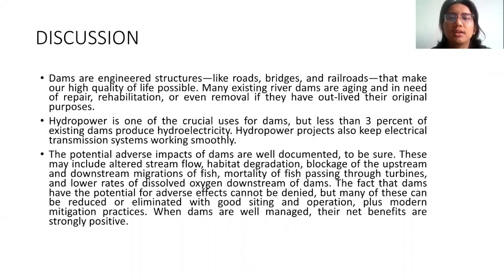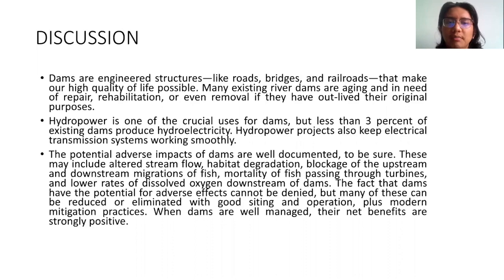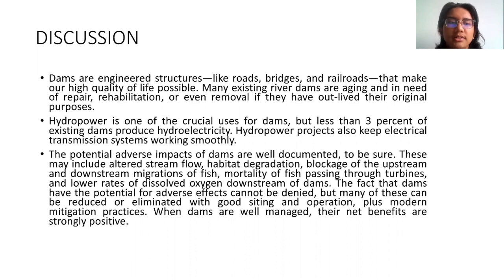Dams are engineered structures like roads, bridges, and railroads that make our high quality of life possible. Many existing dams are aging and in need of repair, rehabilitation, or even removal if they have outlived their original purposes. Hydropower is one of the crucial uses for dams, but less than 3% of existing dams produce hydroelectricity. Hydropower projects also keep electrical transmission systems moving smoothly. The potential adverse impacts of dams are well documented, including altered stream flow, habitat degradation, blockage of upstream and downstream migration of fish, mortality of fish passing through turbines, and lower rates of dissolved oxygen downstream. Many of these effects can be reduced or eliminated with good design, operation, and modern mitigation practices. When dams are well managed, their net benefits are strongly positive.